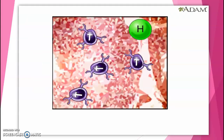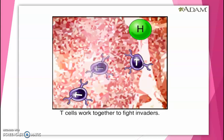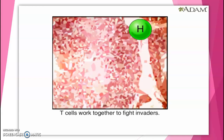These include helper, killer, and suppressor T cells, which work together to attack foreign invaders. They provide what is called cell-mediated immunity, which can become deficient in persons with HIV — the virus that causes AIDS — as HIV attacks and destroys them.